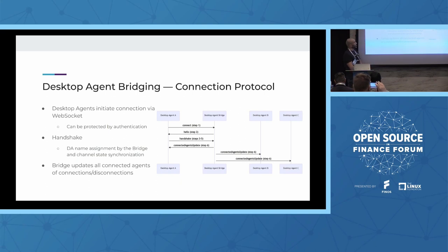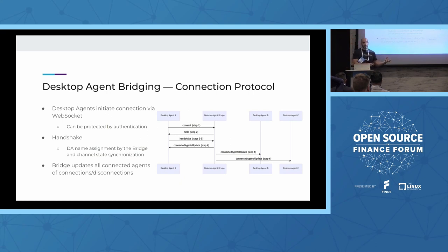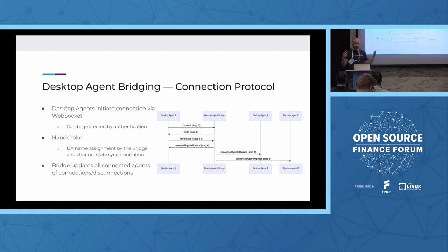Regarding the connection protocol, desktop agents will connect to the bridge via WebSocket. It can be protected by authentication, driven by configuration. There will be a handshake during which desktop agent name assignment occurs — a desktop agent can request a name for itself, and the bridge will decide if that name is acceptable or otherwise assign a name the desktop agent must accept. There's also channel state synchronization, which is one of the most complicated parts of the proposal. If two desktop agents have applications on the same channel but with different context and then get bridged, synchronization is needed so they don't end up with different contexts on the same channel. Finally, the bridge will inform all connected agents of connections and disconnections of other agents.